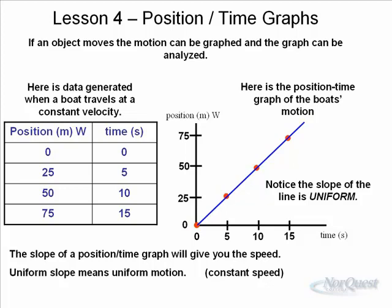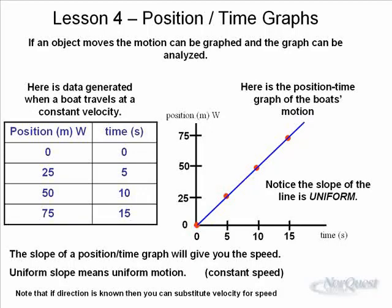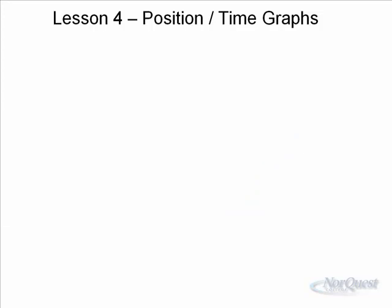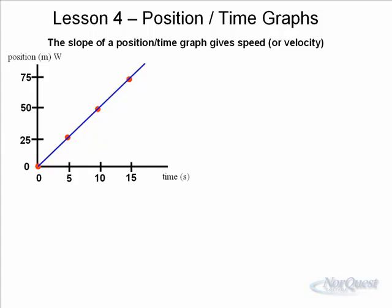If you knew what the direction was, then you could substitute displacement for distance. In this case, we do know — since the direction is west, it's not just the distance we know but also the displacement. So it's not just the speed we'll know, but also the velocity. The method of finding the speed or velocity from a position time graph, or a displacement time graph, is that we take the slope. The slope of a position time graph gives the speed.